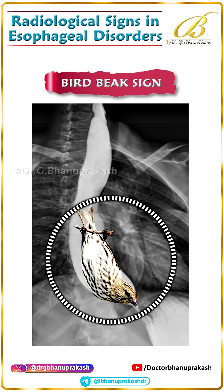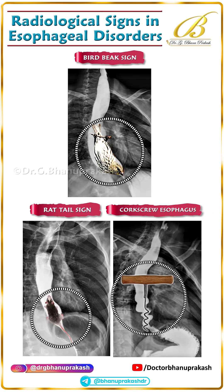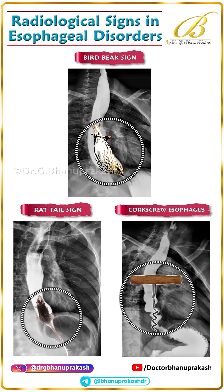To summarize: bird beak in achalasia cardia, rat tail in esophageal carcinoma, and corkscrew in diffuse esophageal spasm. Thank you.